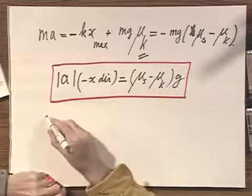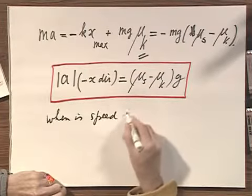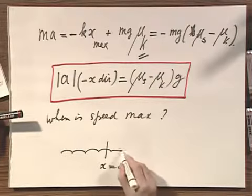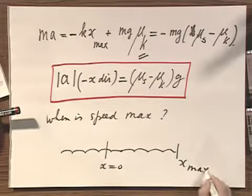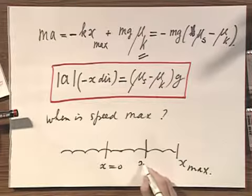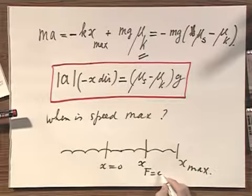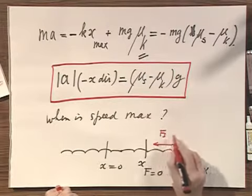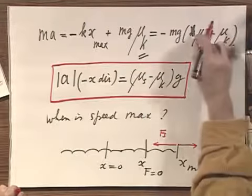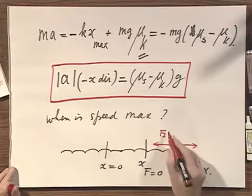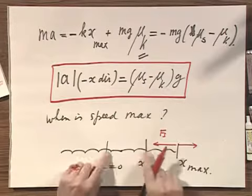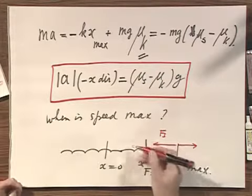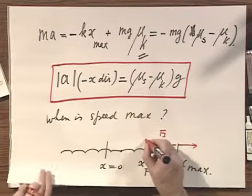Now, when is the speed maximum? That is a very interesting question. Here is the spring; let this be x equals zero, this was x maximum. It starts to move and there comes a position x which I will call where f equals zero. When it starts to move, the spring force is larger than the frictional force because μk is smaller than μs. But as it moves to the left, the spring force goes down because it is proportional to x. So there comes a point where these two forces cancel each other out, the object is no longer being accelerated, and right there you must have reached maximum speed.